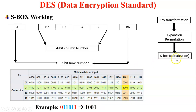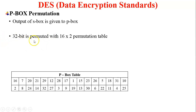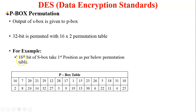The working of S-Box is complete. Next is P-Box, or permutation. The output of the S-Box is 32 bits and is given to the P-Box. The 32 bits are permuted with a 16×2 permutation table — a 32-bit P-Box table. For example, the 60th bit of the S-Box output takes the first position as per the permutation table, generating the output of the P-Box permutation.